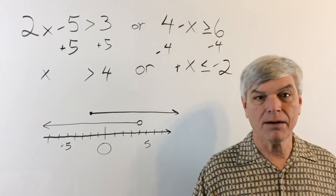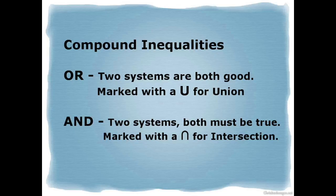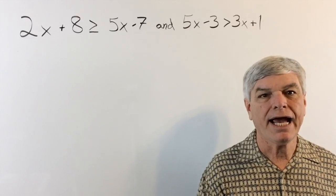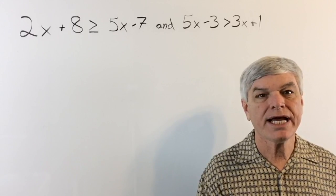Now let's look at an AND problem. The second type of compound inequality is an AND inequality, where two systems both must be true at the same time. It's marked with an upside-down U for intersection — the union symbol U means union, and the upside-down U means intersection, so only the overlap is true. Our problem: 2x plus 8 is greater than or equal to 5x minus 7, AND 5x minus 3 is greater than 3x plus 1.